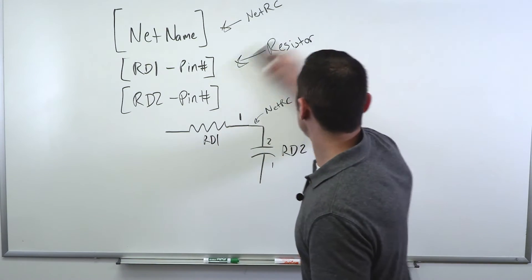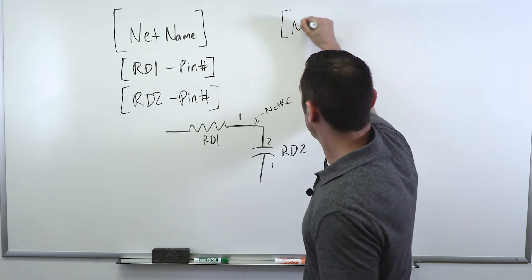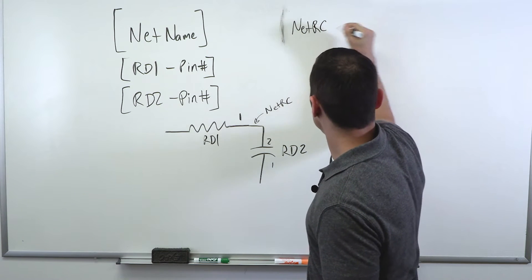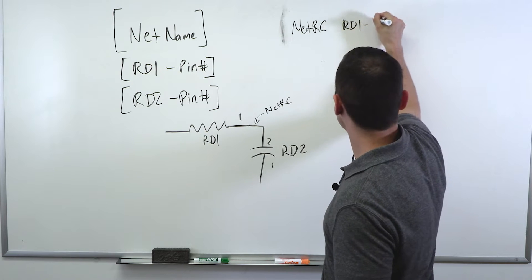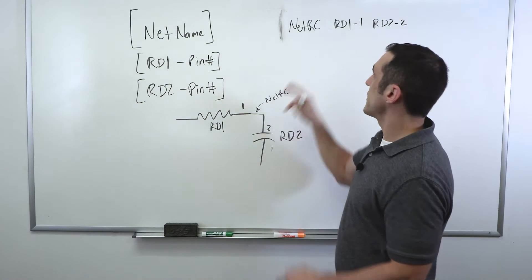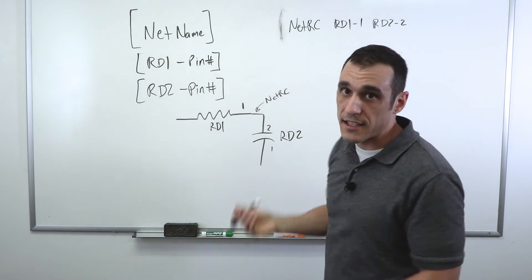It would just be net RC, and then space RD1-1, RD2-2. And your netlist is going to be full of these rows of different data. They're all going to have different net names, they're all going to have all these different connections.